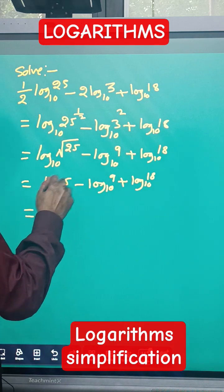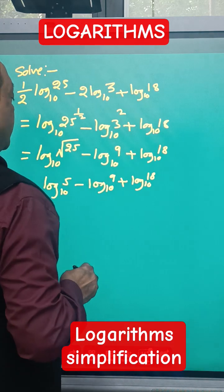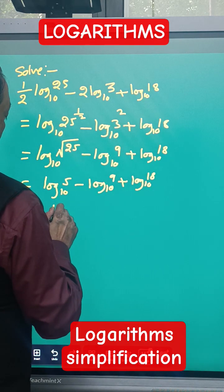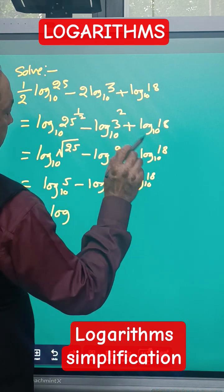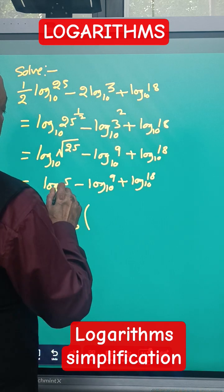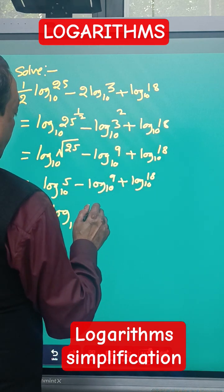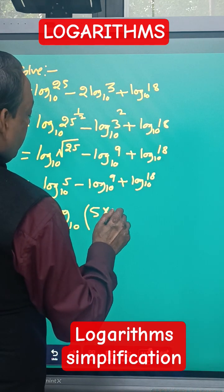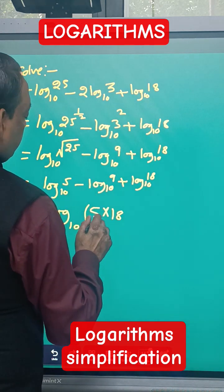So now in the log there is a rule: whatever is minus given we have to divide, and whatever plus is given we have to multiply. So now this becomes log, and because all the bases are the same, make sure the base has to be the same. So whatever is plus given, 5 and 18 are plus so these two we have to multiply, and this is minus so this will divide.